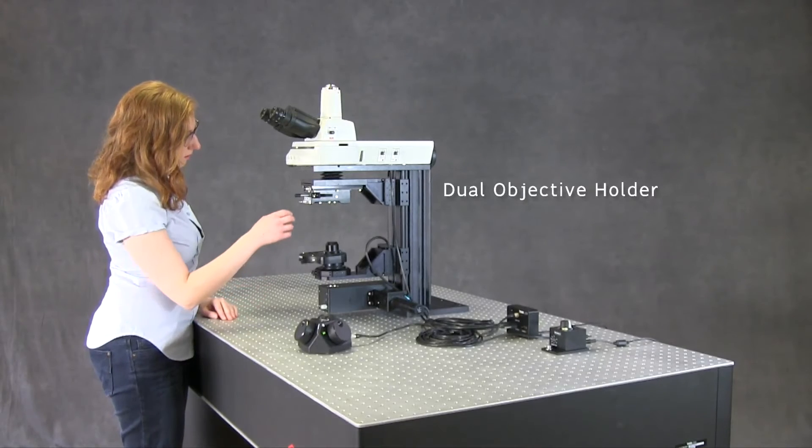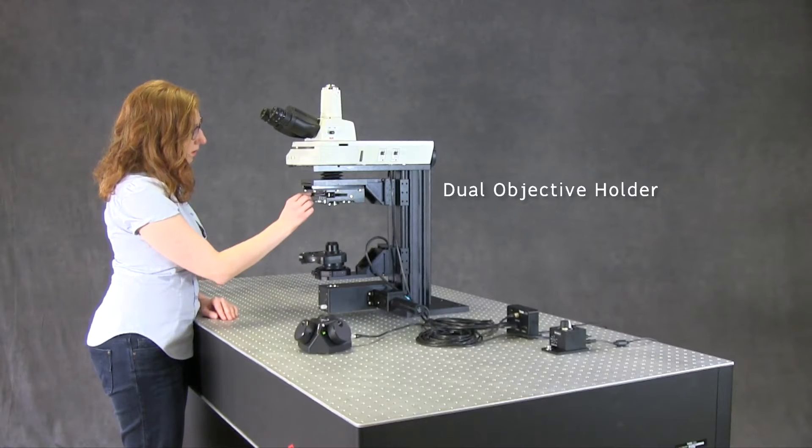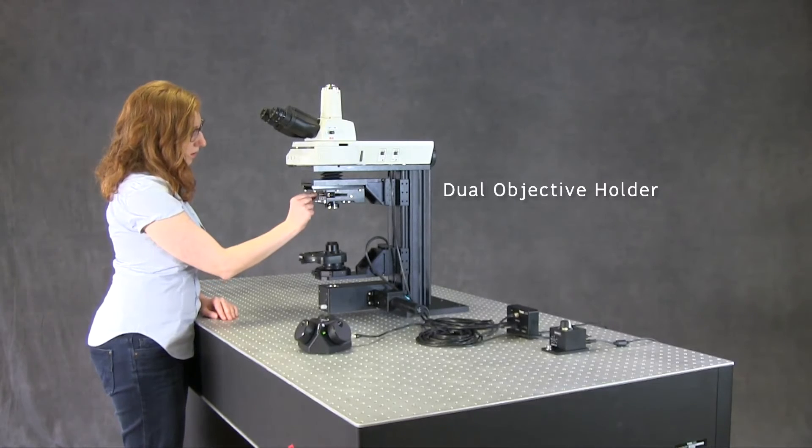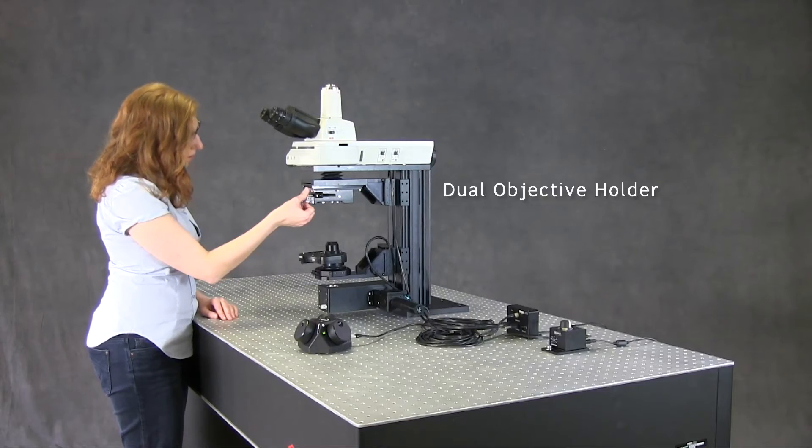This microscope is equipped with a dual objective holder, letting you use a low magnification objective to locate the region of interest, and then a high magnification objective to obtain high resolution images.